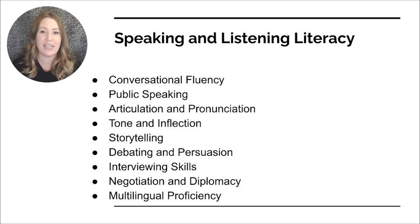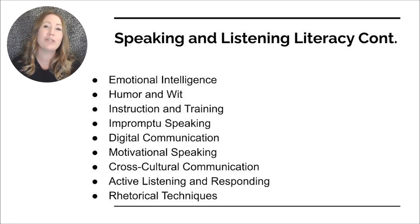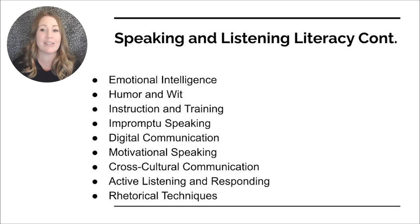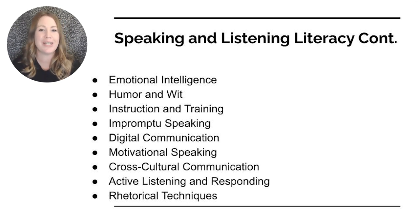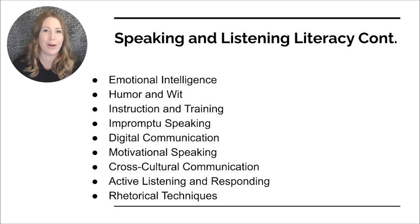Multilingual proficiency is competently speaking and switching between multiple languages considering linguistic and cultural nuances. Emotional intelligence involves using vocal cues, pauses, and emphatic expressions to convey emotions and connect with others. Humor and wit involves employing humor appropriately to engage and entertain listeners. Impromptu speaking is delivering coherent, structured speeches or responses without prior preparation.